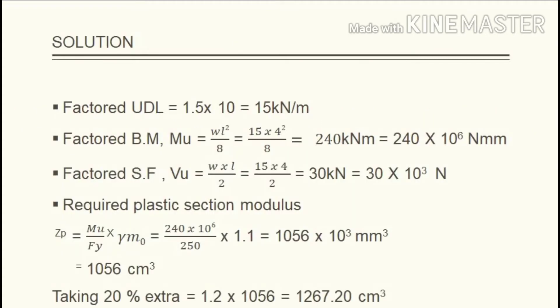So let's start our solution. First of all we have to find the factored UDL. The beam is loaded with 10 kilonewton per meter, so to make it factored we multiply by a factor 1.5. That is 1.5 times 10 equals 15 kilonewton per meter. Next is factored bending moment Mu. For a simply supported beam, Mu equals WL squared by 8. That is 15 times 4 squared by 8, which equals 240 kilonewton meter. To convert kilonewton to newton mm we multiply 240 by 10 raised to 6, which is 240 times 10 raised to 6 newton mm.